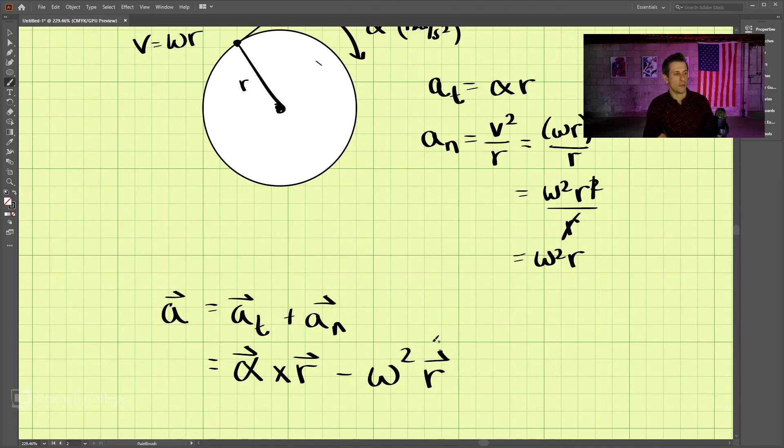This term is the centripetal term. And why the negative sign? Because it points towards the middle of the rotation axis. So this is the vector formulation of the acceleration of an object rotating around a fixed axis.